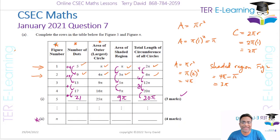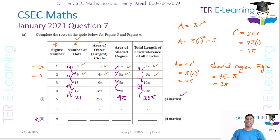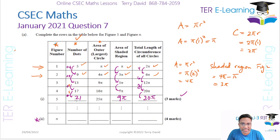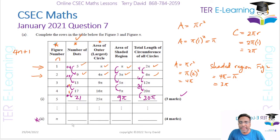For the pattern rule: we want a relationship between the figure number n and the number of dots. Since we keep adding four, we try 4n + 1. Checking: 4(1) + 1 = 5 ✓, 4(2) + 1 = 9 ✓, 4(3) + 1 = 13 ✓, 4(4) + 1 = 17 ✓. So the rule for the number of dots is 4n + 1.